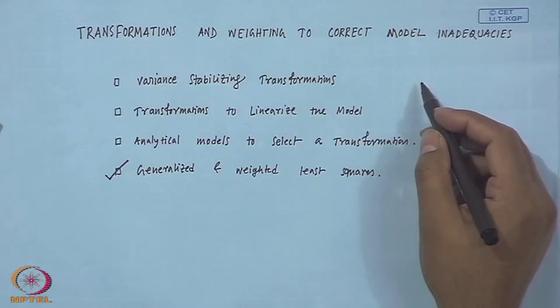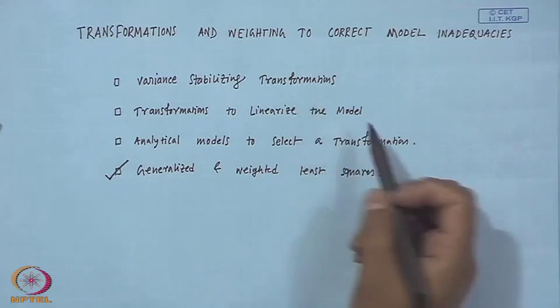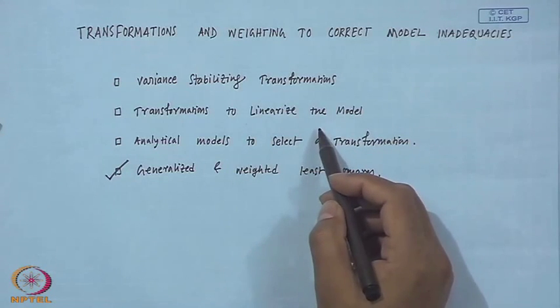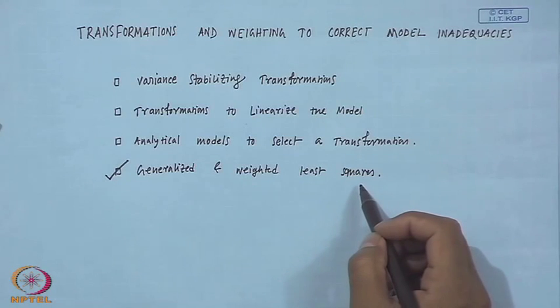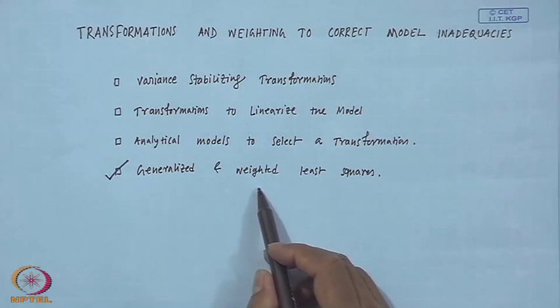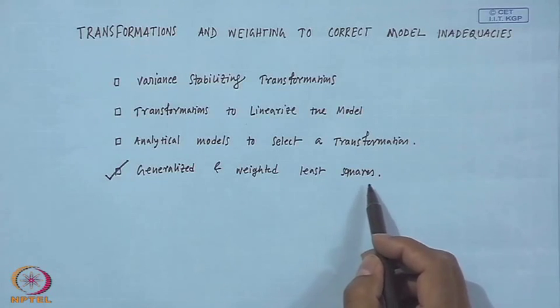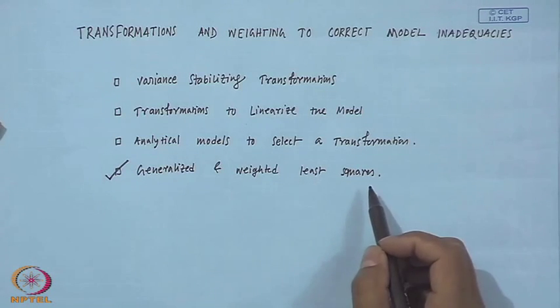Hi, so this is my third lecture on transformation and weighting to correct model inadequacy. We already talked about variance stabilizing transformation, transformation to linearize the model, and generalized and weighted least square. Today I want to give an example to illustrate the weighted least square technique we talked about in the previous class, and also I am going to talk about analytical methods to select a transformation.